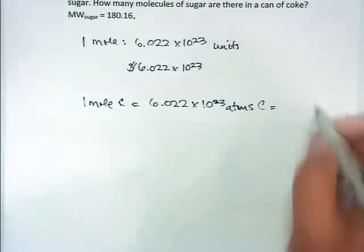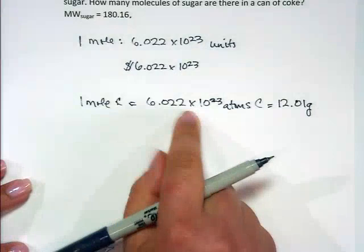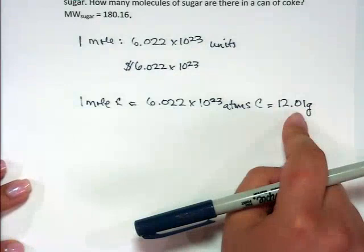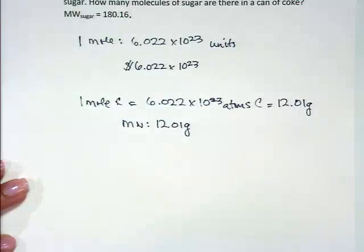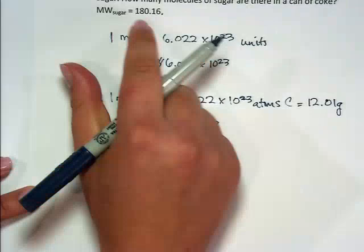So 6.022 times 10 to the 23 atoms of carbon weighs 12.01 grams, and that is one mole of carbon. So here, when we say the molecular weight of sugar is 180.16 grams, we're saying that in one mole, that's how much that weighs.